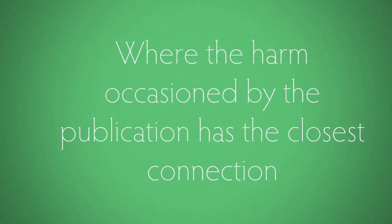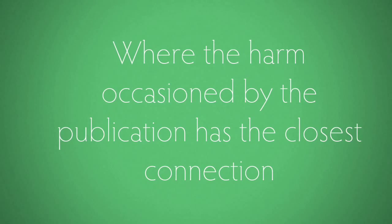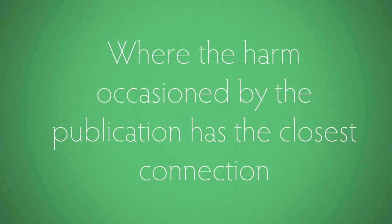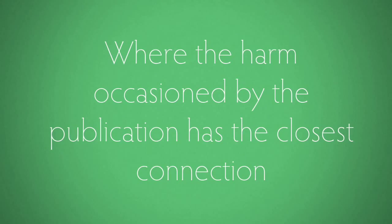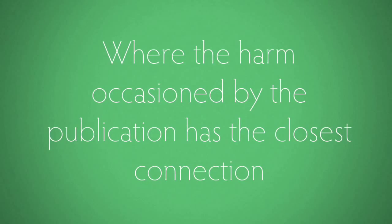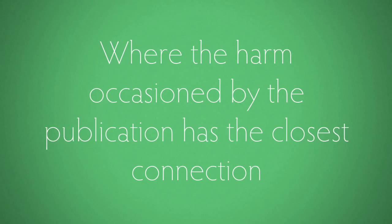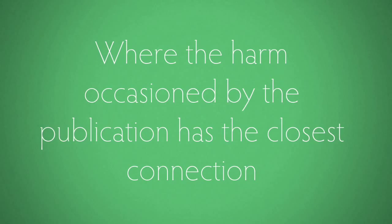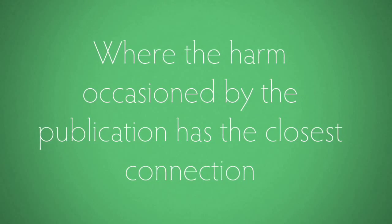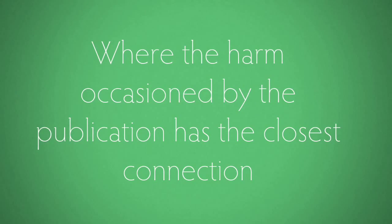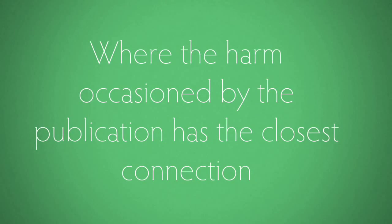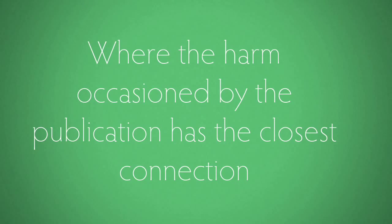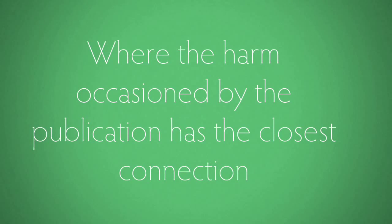Now in all the states, the uniform defamation legislation says that for a case in Australia, the applicable law is that of the jurisdiction in which the harm occasioned by the publication as a whole has the closest connection. This will usually be the jurisdiction in which the plaintiff is a resident or in which they have their reputation — normally where they live, although sometimes it might be the place where they do business. Wherever their reputation is strongest will normally be where the harm is strongest, but the court will take into account the context, the extent of the publication, and the extent of the plaintiff's reputation in deciding the appropriate jurisdiction.